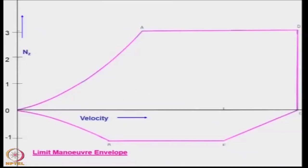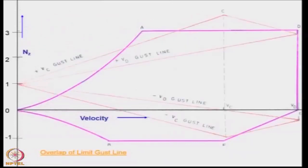On this particular graph, we have to superimpose the loading that can be created because of the additional load factor due to the gusts. When you superimpose, we notice that there are certain areas which are beyond the limit maneuver envelope.